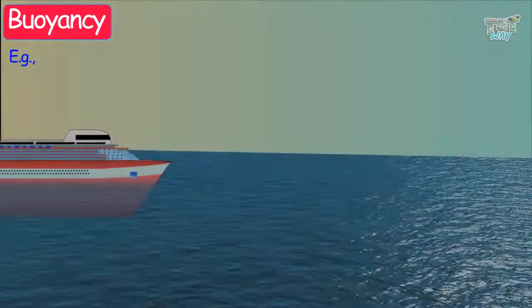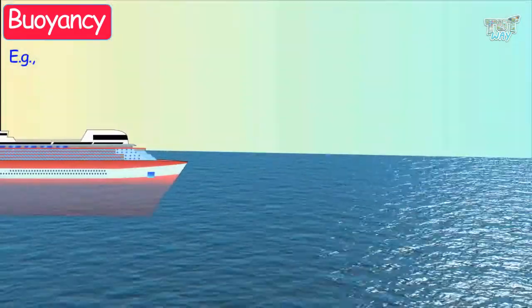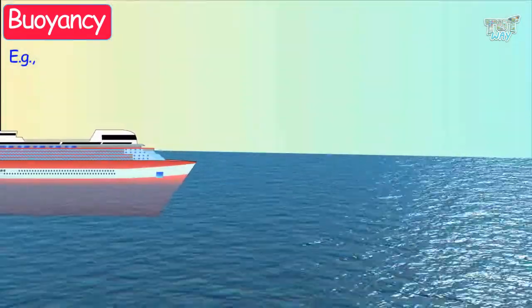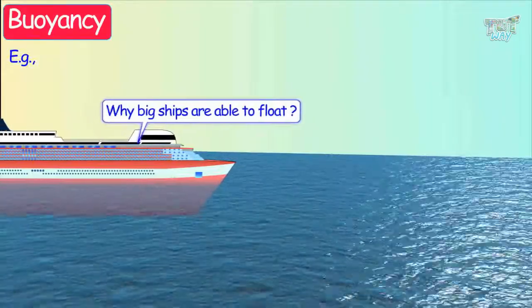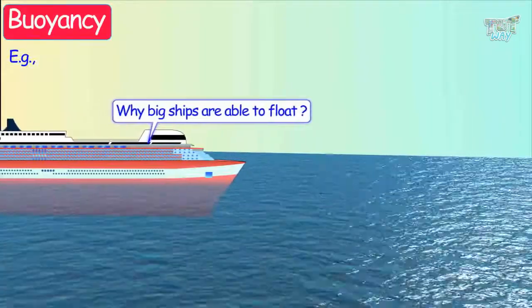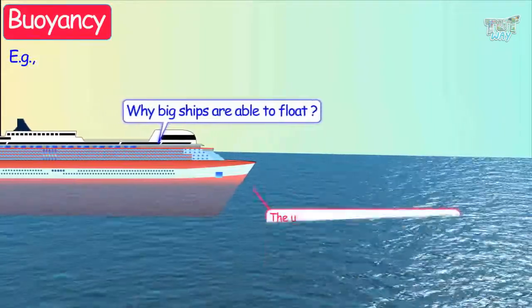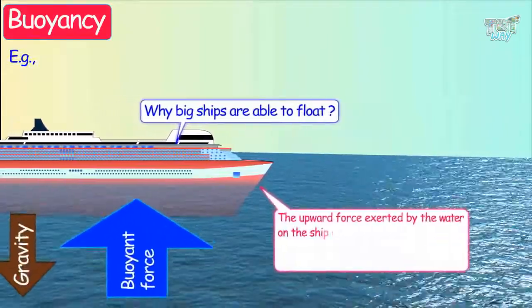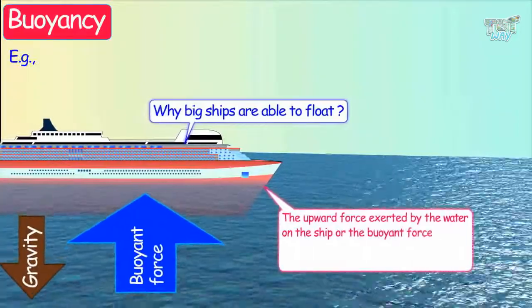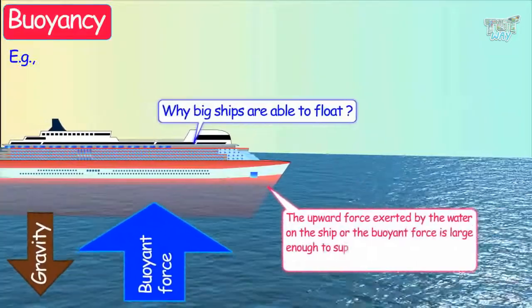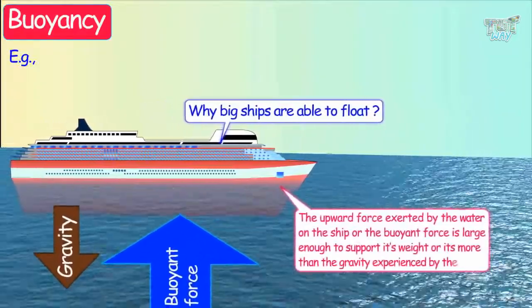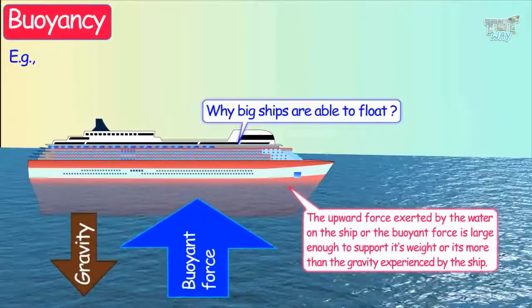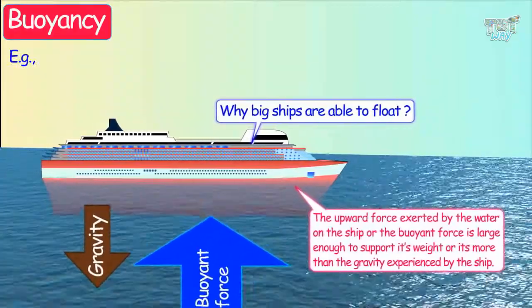For example, you see big ships floating in the water. Why are they able to float? It is because the upward force exerted by the water on the ship — the buoyant force — is large enough to support its weight, or it's more than the gravity experienced by the object.